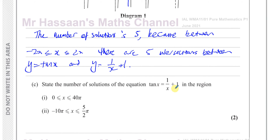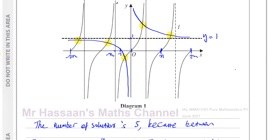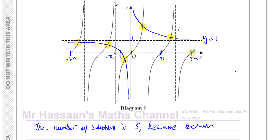Now it says: state the number of solutions of tan x equals 1 over x plus 1 for x between 0 and 40 pi. Remember that the solutions repeat every pi radians, because the tan curve repeats itself every pi radians. Between 0 and pi there is one intersection, between pi and 2 pi there will be another one, and it continues like that. So between 0 and 40 pi, there are going to be 40 intersections — one intersection every pi radians.